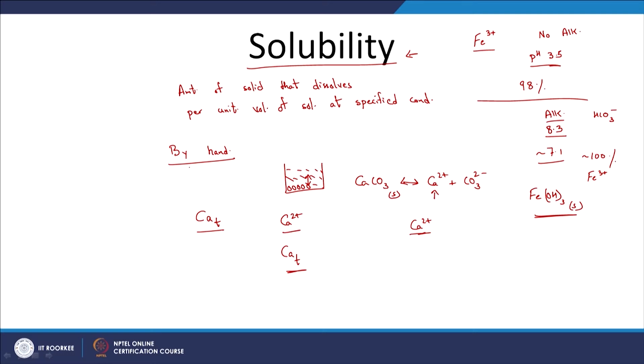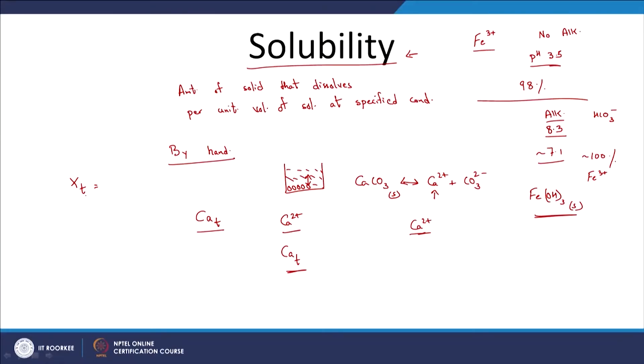To calculate solubility by hand, you set up component balance equations with x_total as a function of H+. For example, given CaCO3 solid at pH 7, you express Ca_total as a function of H+ and solve for it since you know the pH. This is relatively straightforward.